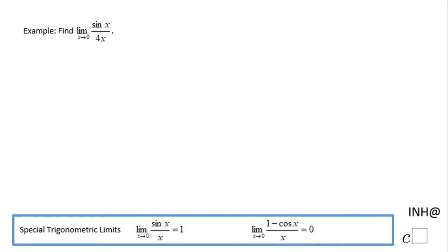Welcome or welcome back at I Need Help at C Squared. In this example we need to find the limit when x approaches 0 of sine of x over 4x. You'll notice here I have these two special trigonometric limits. This is the one we're going to use in this example.